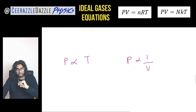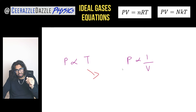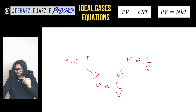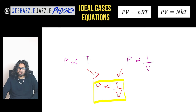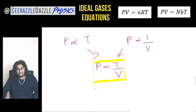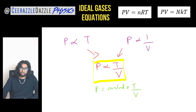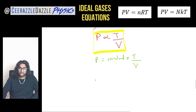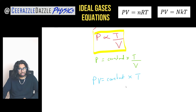Now let's combine both relationships. Pressure is directly proportional to temperature, and pressure is inversely proportional to volume. Combining them: P is proportional to T over V. Moving from the proportional sign to the equal sign using mathematics, P equals a constant times T over V. Rearranging by multiplying both sides by V gives PV equals a constant times T.